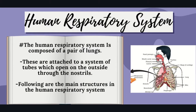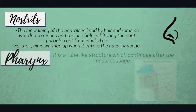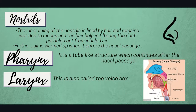The human respiratory system is an organ system responsible for inhaling oxygen and exhaling carbon dioxide. It is composed of a pair of lungs attached to a system of tubes that open to the outside through the nostrils. The primary respiratory organs are the nostrils. The inner lining of the nostrils is lined by hair and remains wet due to mucus; the hair helps in filtering dust particles from inhaled air. The air is also warmed up when it enters the nasal passage.